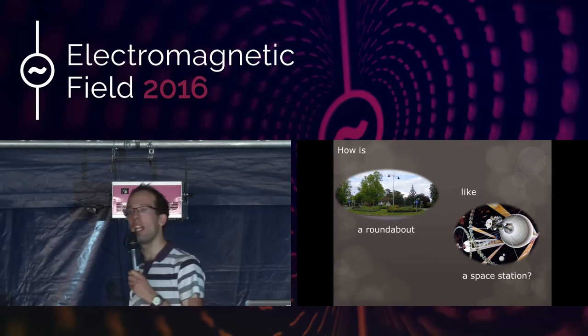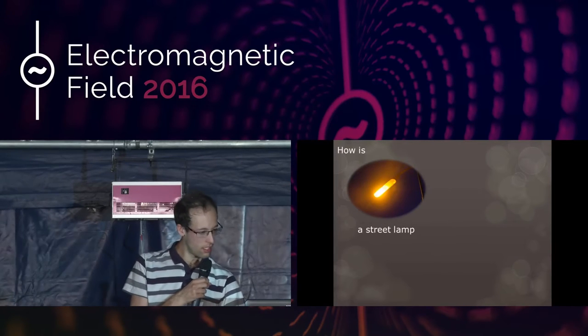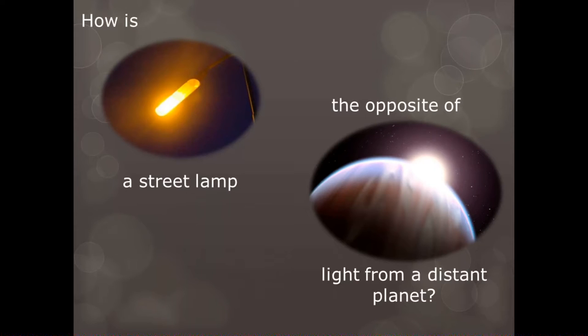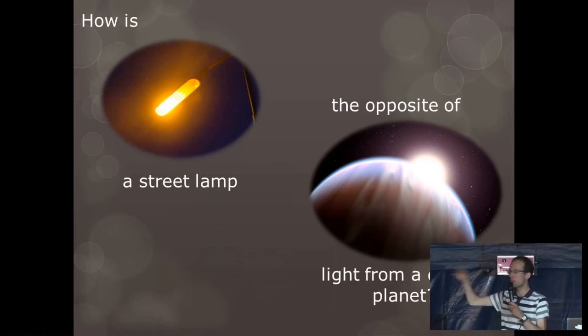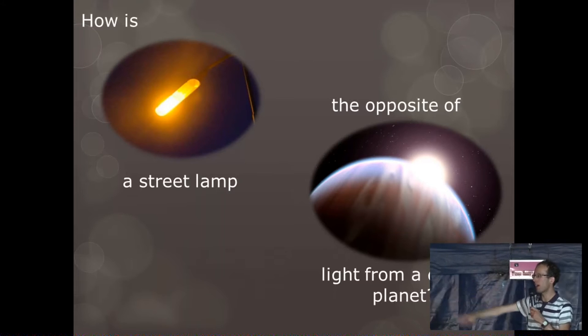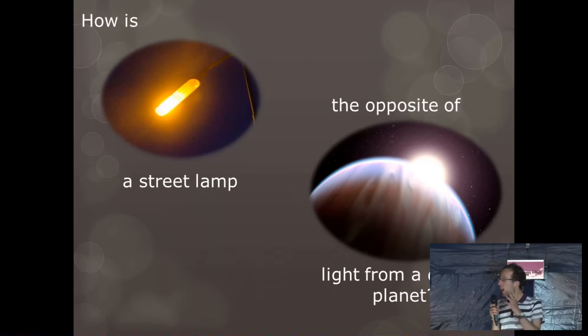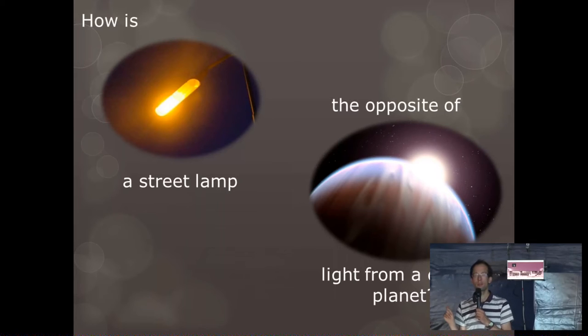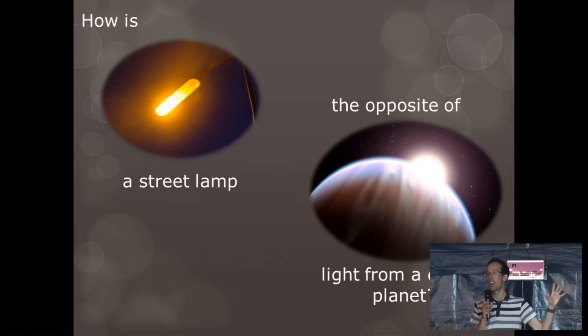So the next one, starting again a little close to home. How is a street lamp the opposite of light from a distant planet? This is a very specific type of street lamp. Who here recognizes a street lamp can tell me what element is used in it? Sodium. Yes, this is a sodium street lamp. The reason they were used is because they put out technically a few, but only one very, very close colors of yellow light. And the reason they do this is down to quantum mechanics.